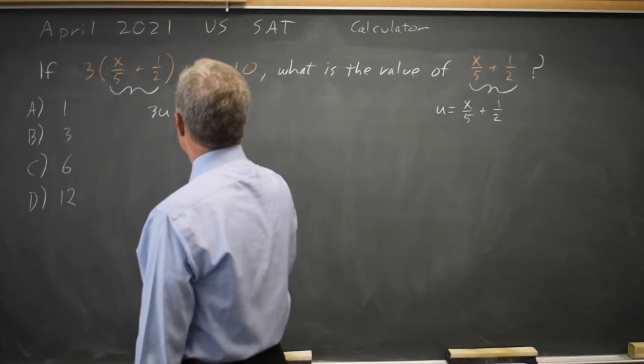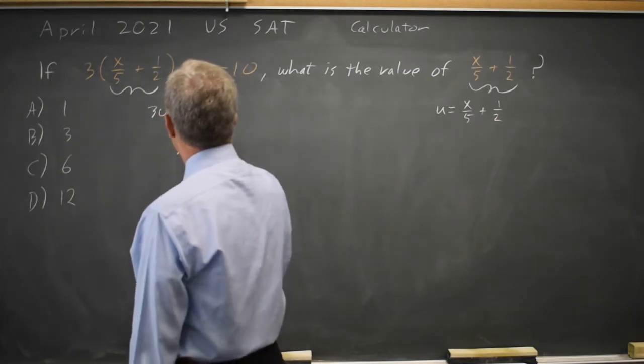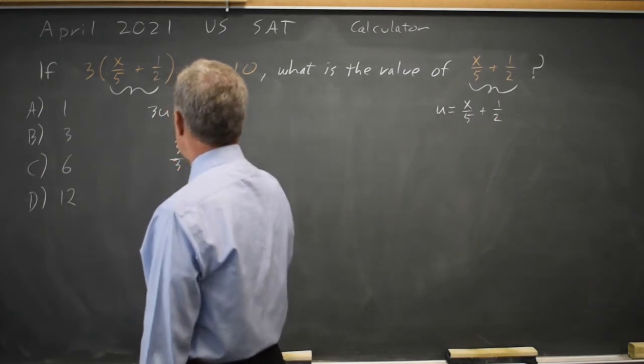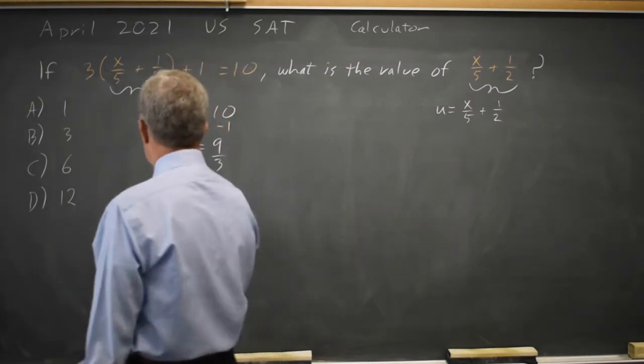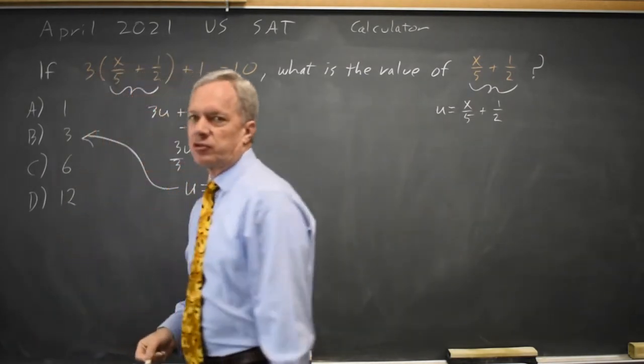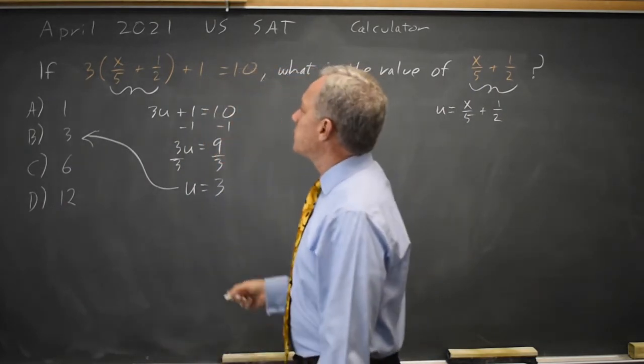If I subtract 1 from both sides, I get 3u equals 9, divide by 3, and I get u equals 3. And u is the expression they're asking us to solve for. I can do the same thing keeping the original expression.